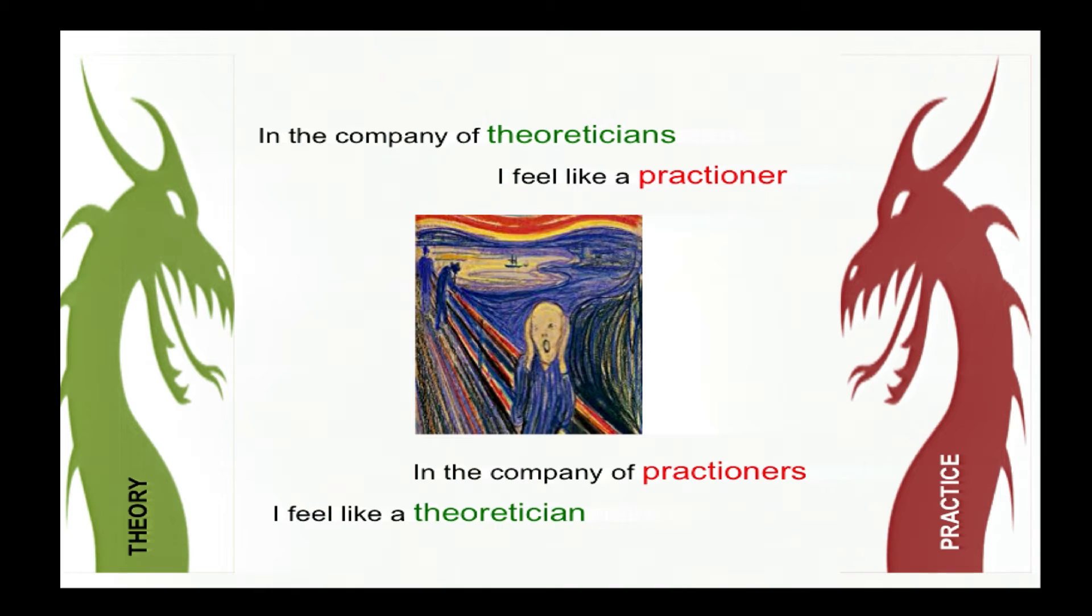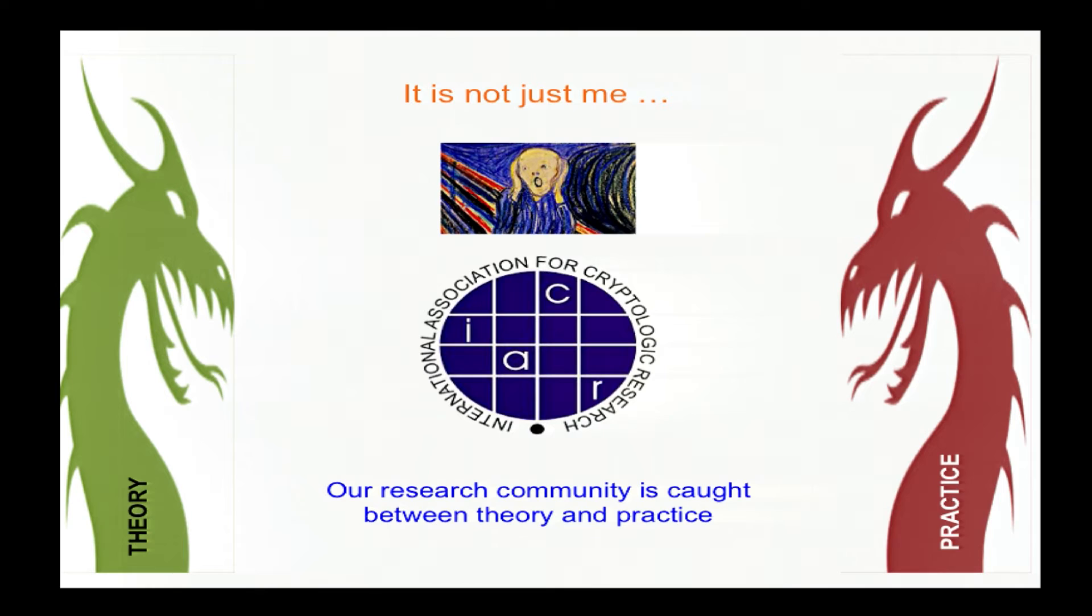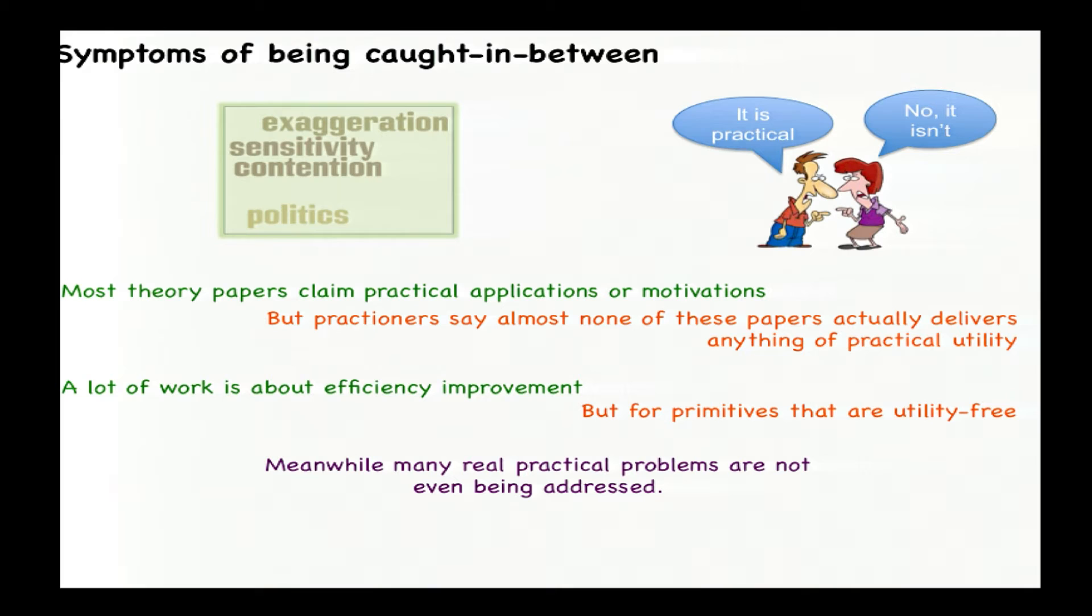In my kind of optimistic youth, I'd envision that working on practice-oriented provable security would make me at home in some kind of united community of theory and practice. But reality proved different. I find that when I'm kind of always on the wrong side of the fence, in the company of theoreticians, I grumble about lack of practicality or exaggerated claims thereof. In the company of practitioners, I grumble about lack of proofs or appreciation for theory. But over time, I've come to think it's not just me. There's some sort of real sense in which all of us as a community are caught between theory and practice. And this manifests itself in many ways, including sensitivity to critiques, contention, and different claims.